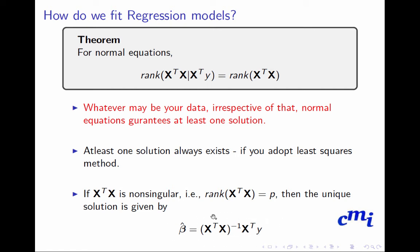So this is the unique solution that I get from the least squares method. I don't have to do any optimization. I can easily just plug in these values from my database and I get the solution. All I have to ensure is that rank of x transpose x is p, or full rank.